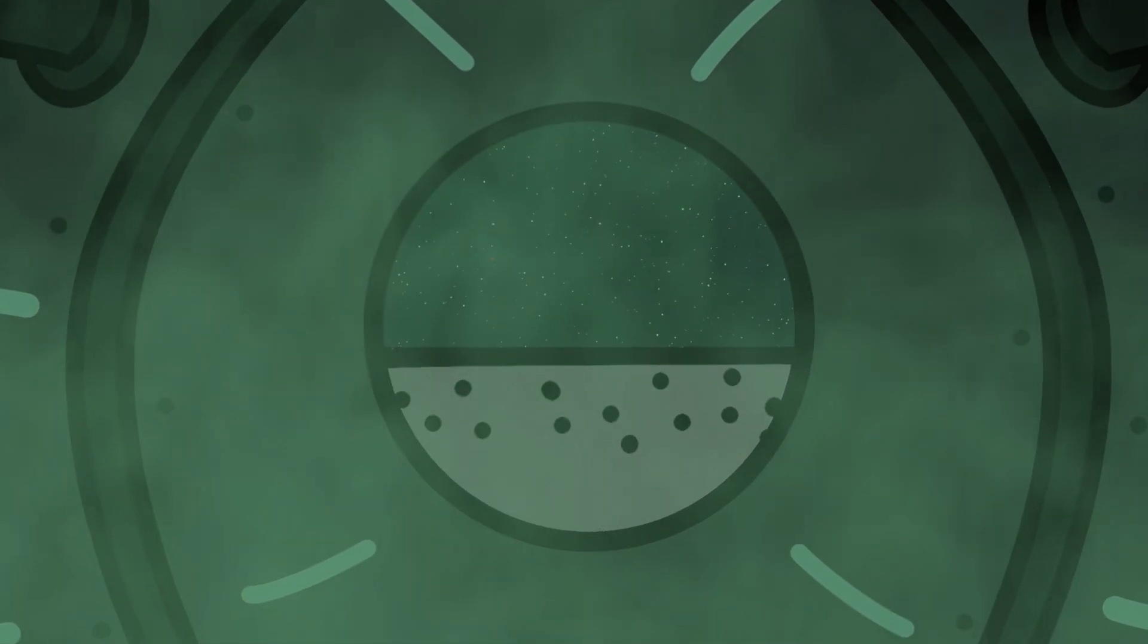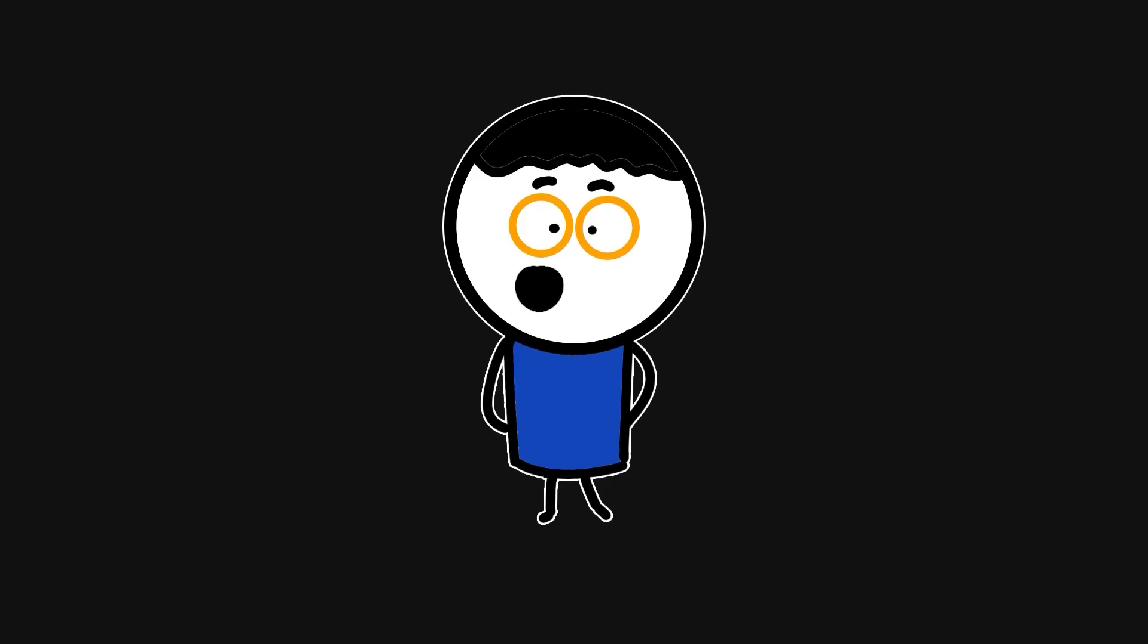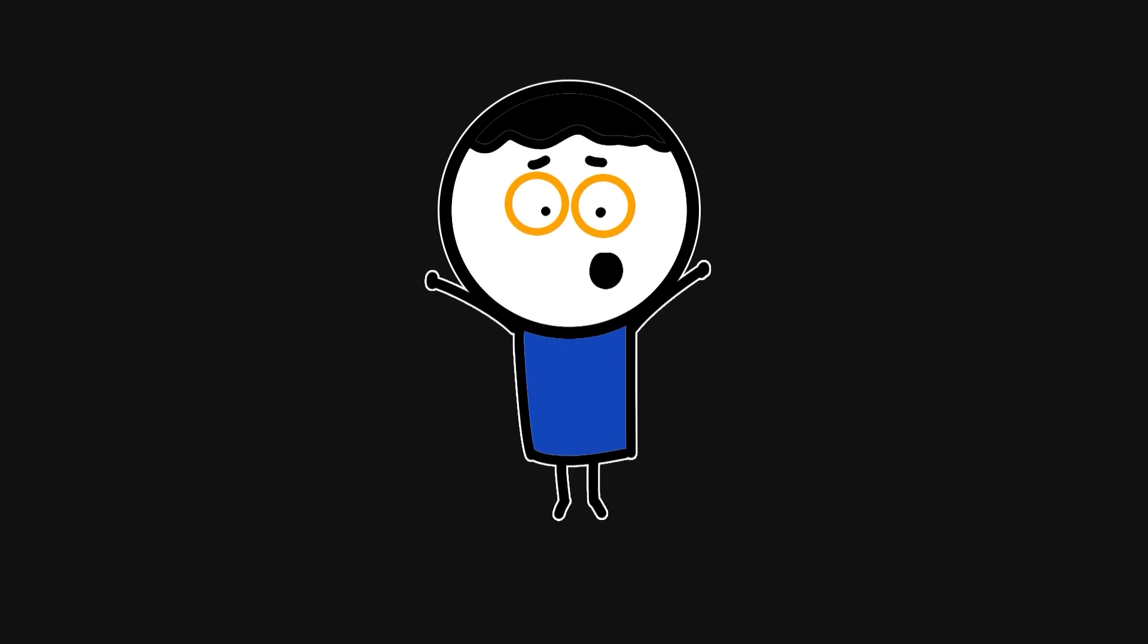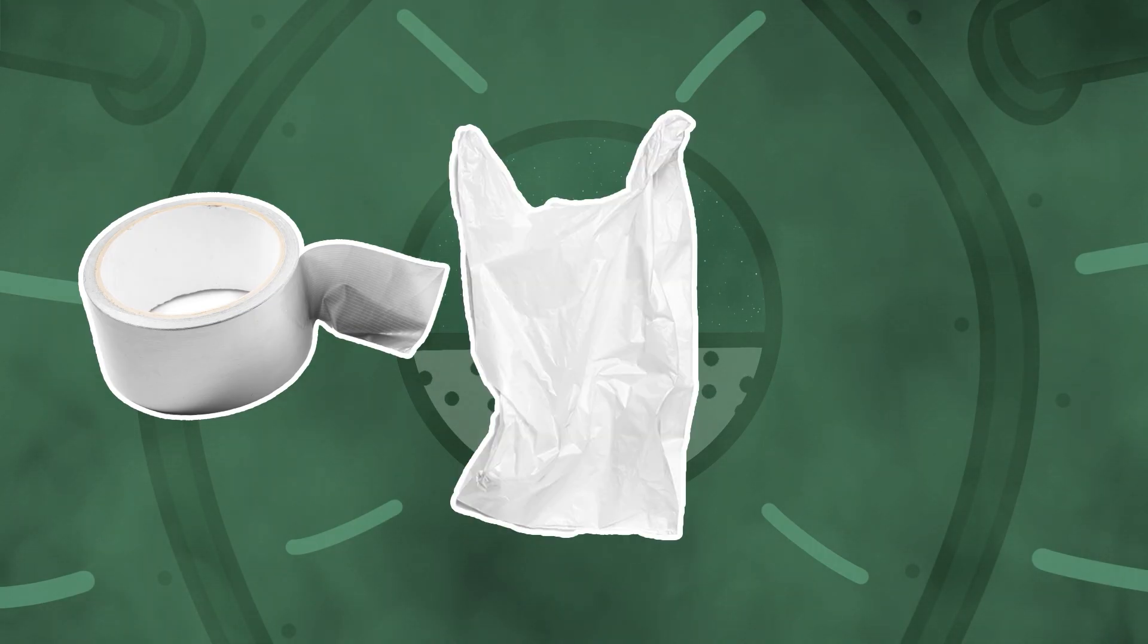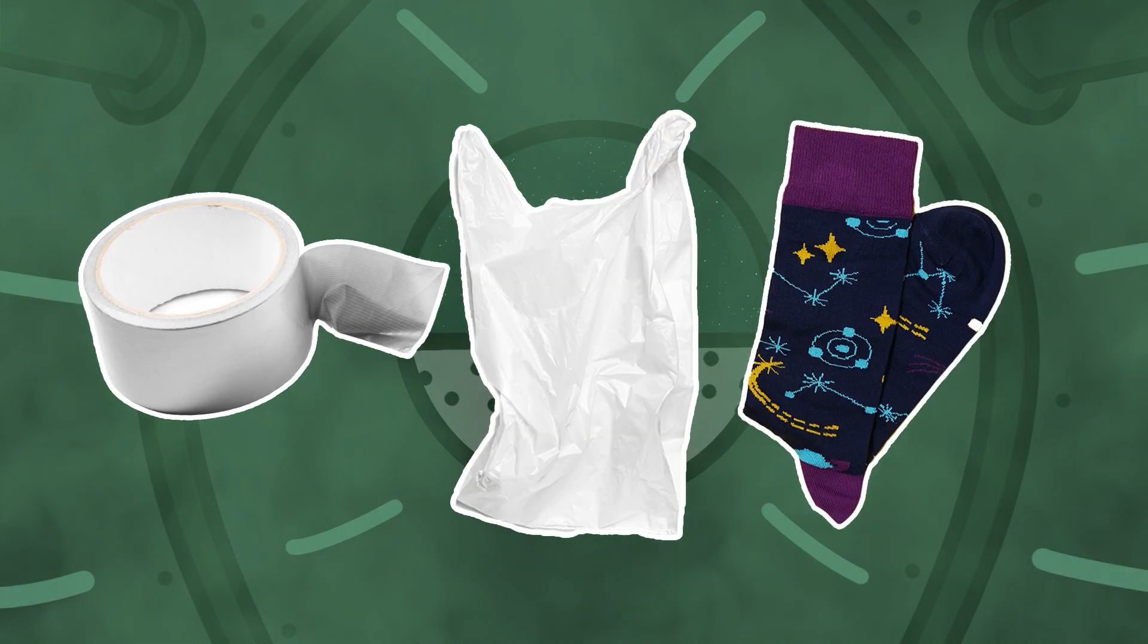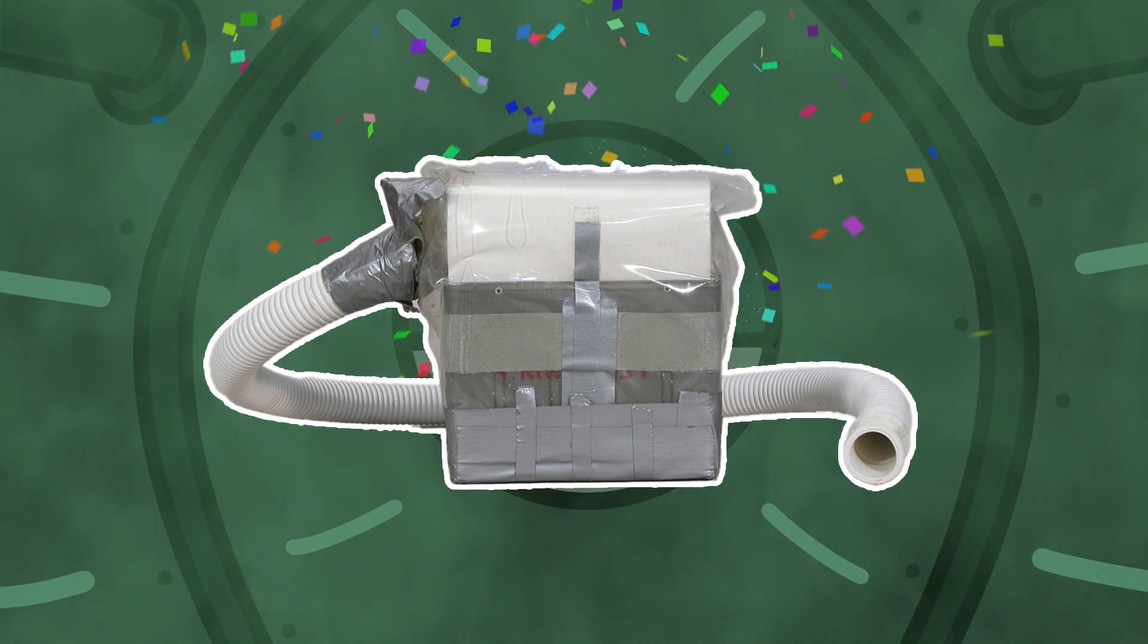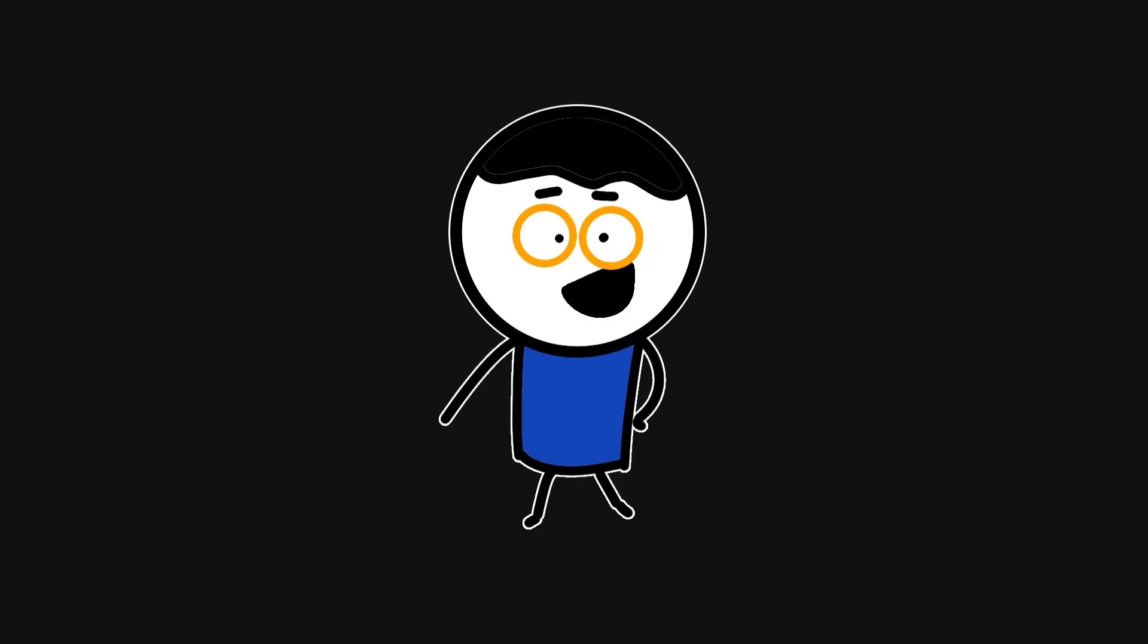With oxygen running so low and no room for error, they have no choice but to work with whatever they can find. Using nothing but duct tape, plastic bags, and a sock, NASA engineers designed a makeshift filter. The crew builds it and it works.